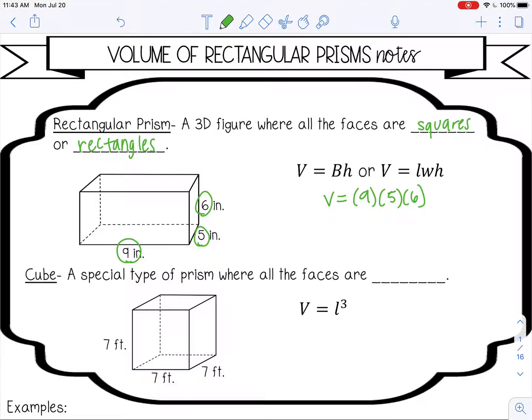And the order really doesn't matter because the length and the width and the height of a rectangular prism really depend on how it's facing and how it's standing. If it's standing on the bottom or if we put it vertical in the air, the volume isn't going to change. So it doesn't matter the order.